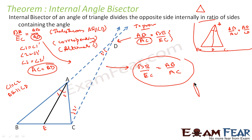And that is what I wanted to prove — hence proved. So by using the Thales theorem, I have proved the angle bisector theorem: if AD is the angle bisector, then AB by AC is equal to BE by EC. I drew a parallel line because I knew only the Thales theorem, and through alternate and corresponding angles, proved that AD equals AC, completing the proof.